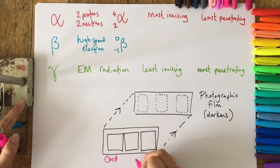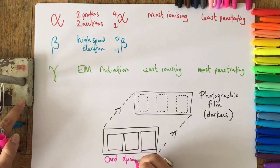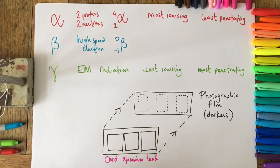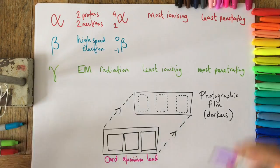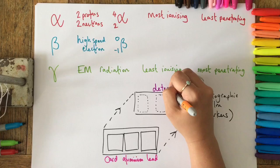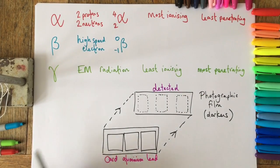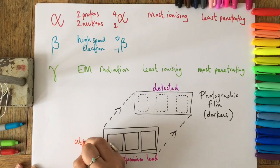These windows at the front are covered by different things. We've got card, aluminum, and lead. On the photographic film at the back, in a moment, I'm going to annotate it so that you can see which radiations are detected on the films. And I'm also going to show you which radiations are absorbed by which of the windows.